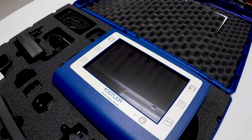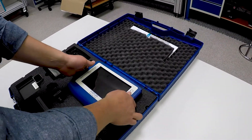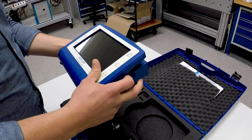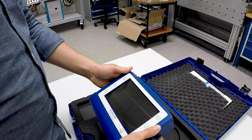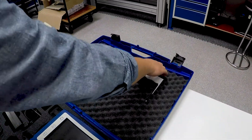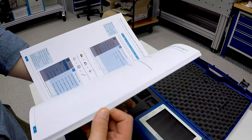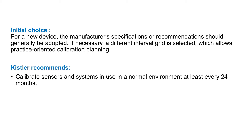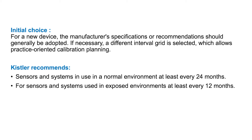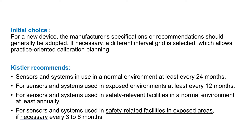You possibly know the situation. You receive a brand new piece of equipment like our Kistler Inspect — you open the box — and the questions repeat again: is this piece of equipment calibrated, and if not, what is the interval? You take a look at the manual and most of the time you will find some hint about the calibration interval. Our recommendation is to follow this recommendation, which for Kistler Instruments is 24 months for most systems in a normal working condition, 12 months if you have an exposed environment, and three to six months for safety-related facilities or exposed areas.